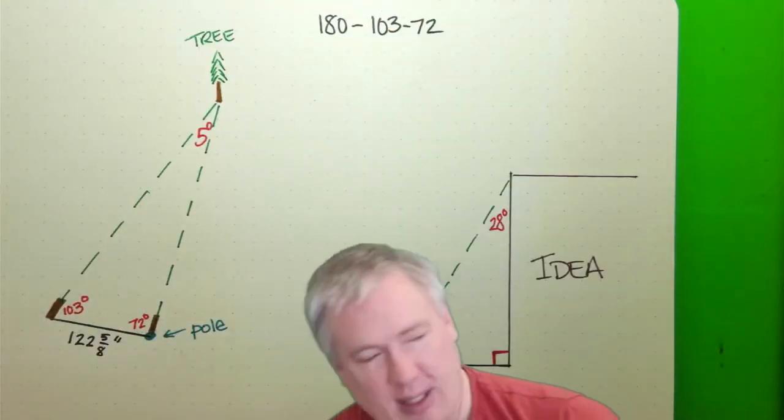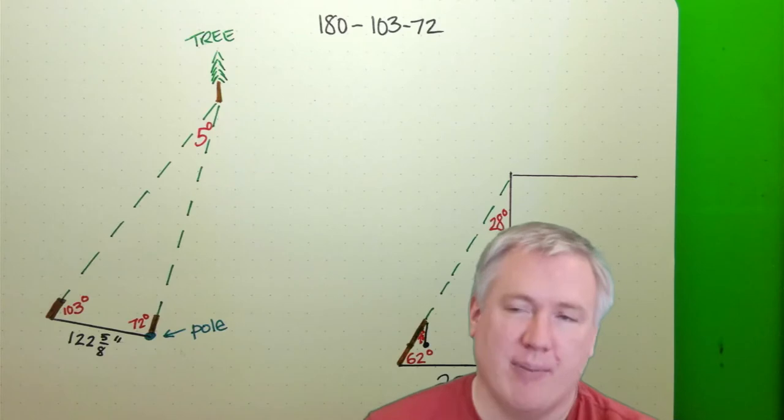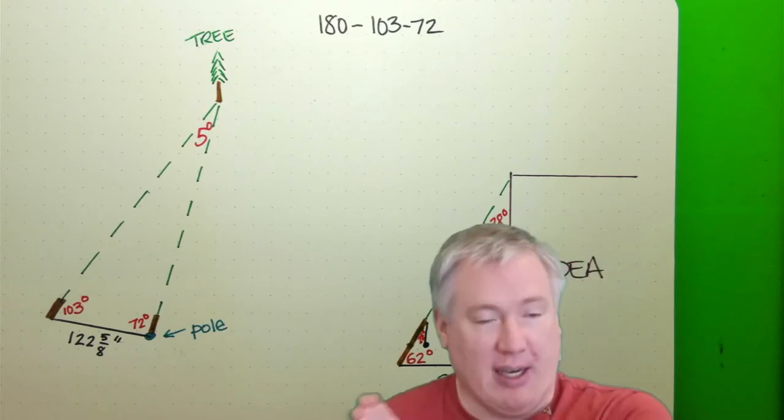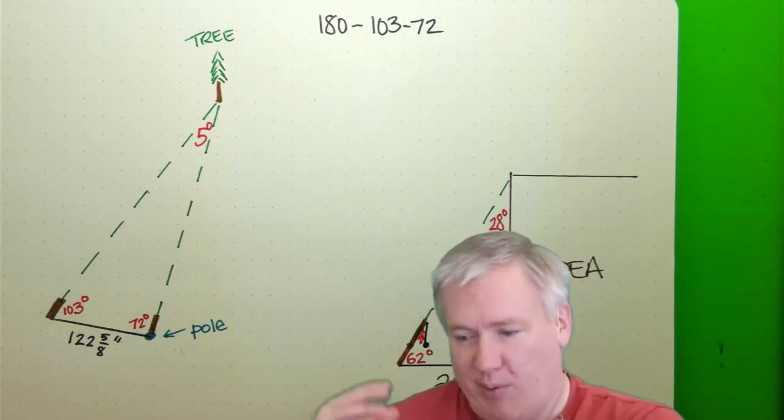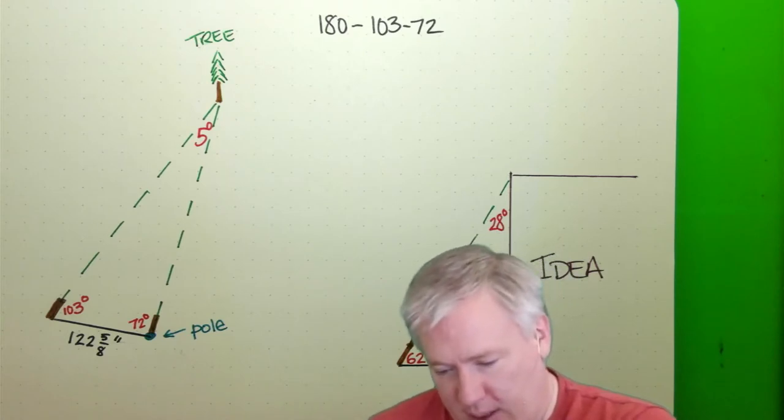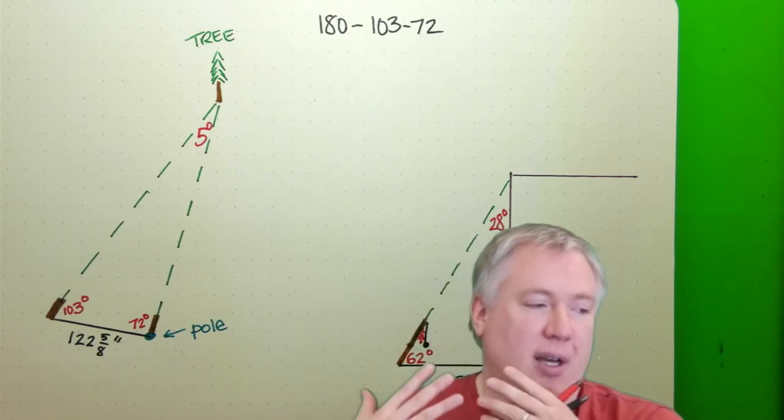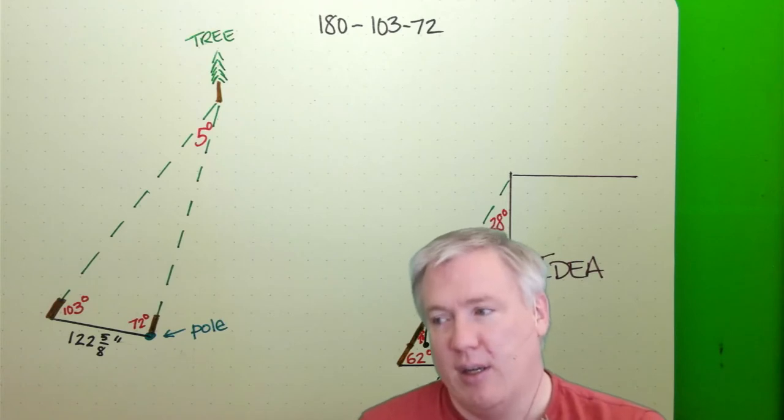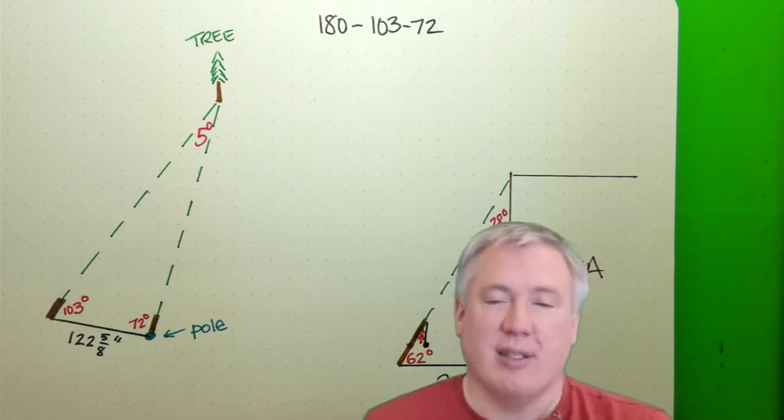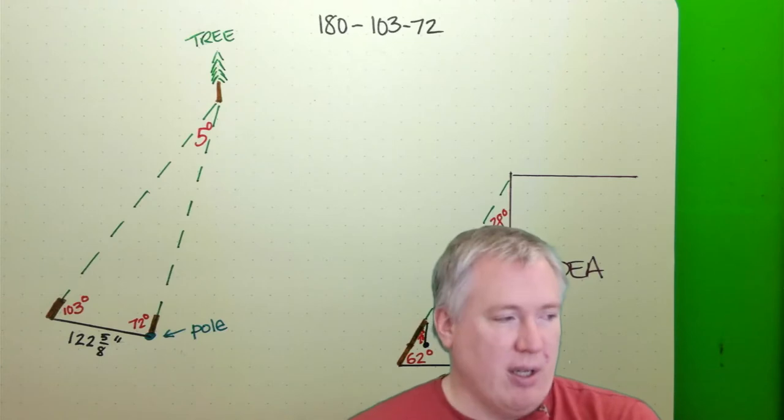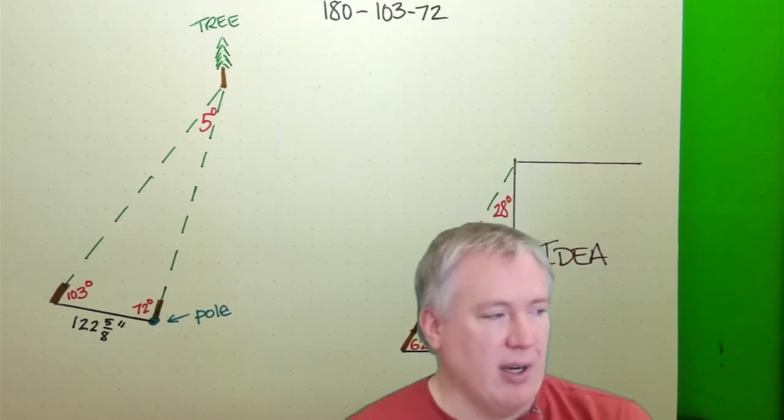There's basically two different paradigms that we're working with. One is the law of sines, which we reviewed and went over last week. And the other is sine, cosine, tangent, which requires that you have a right triangle.